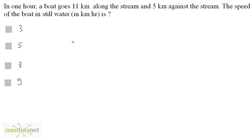In one hour, a boat goes 11 kilometers along the stream and 5 kilometers against the stream. The speed of the boat in still water in kilometers per hour is. So this boat goes 11 kilometers along the stream in one hour, so we have been given the downstream speed. Downstream speed is equal to 11 kilometers per hour.